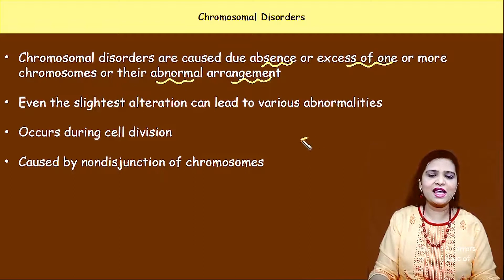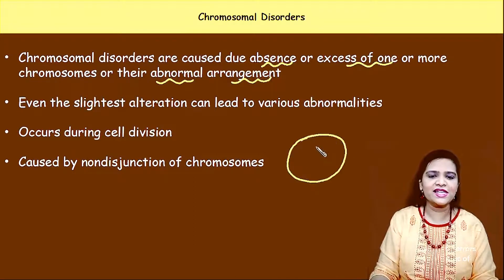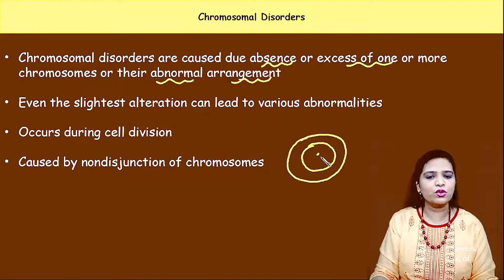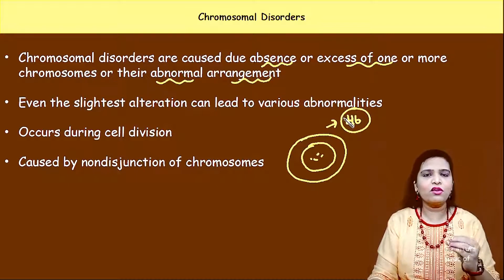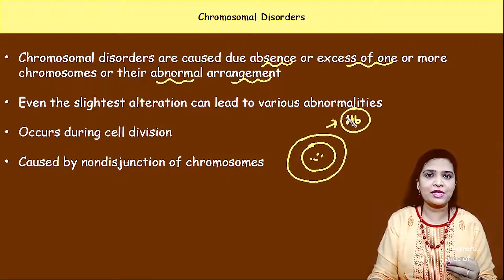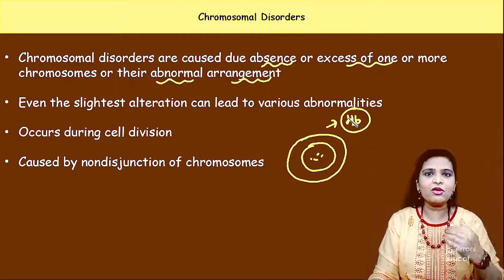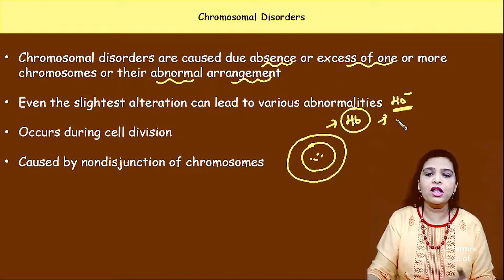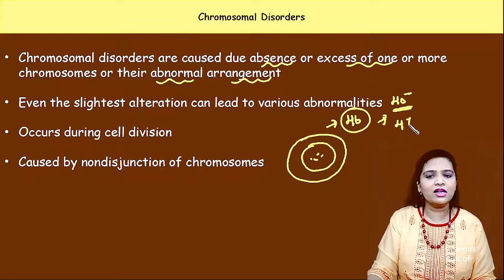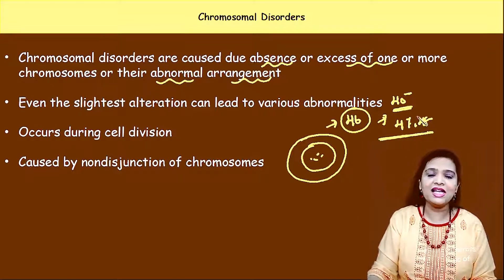We know that in our cell we have a nucleus, and inside the nucleus we have chromosomes. We have 23 pairs of chromosomes, totally 46 chromosomes. This is the standard number of human chromosomes in every cell. Suppose if there is any variation in the number of the chromosomes — say if somebody is having 45 instead of 46, or 47 or 48 — this is called chromosomal abnormality.